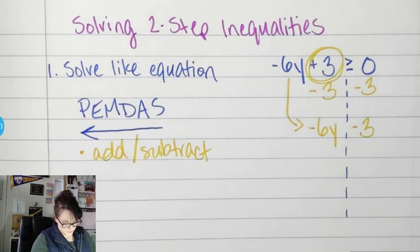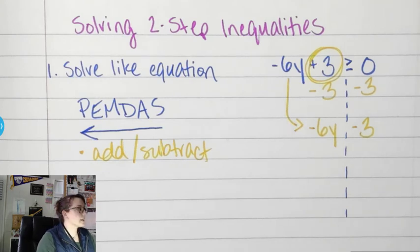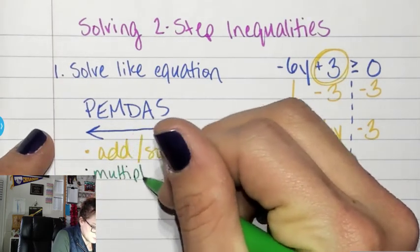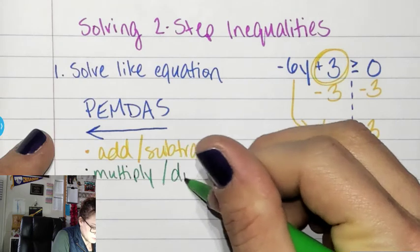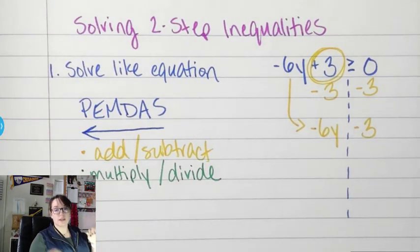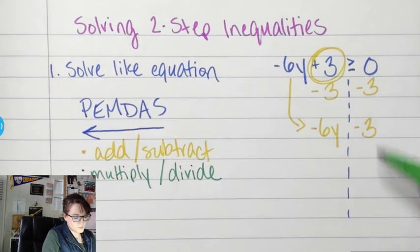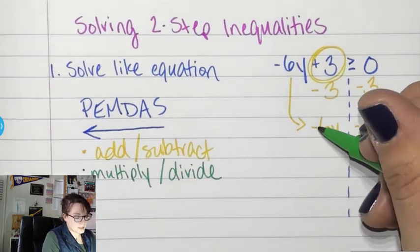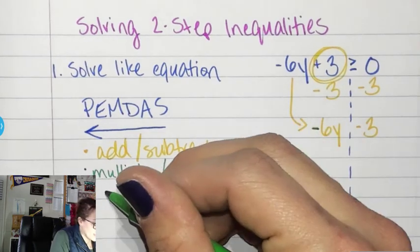Second step. This is where things change. You still solve it the same. But now I'm looking for multiply-divide. Do you see anything that's multiplied or divided? Yes. Not just 6, but what? Negative 6. If it's a negative.